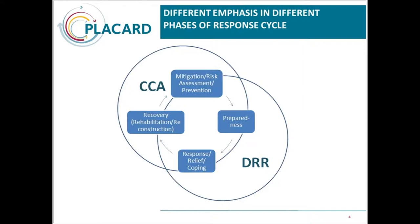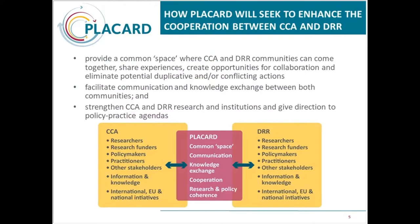It is useful to look at the policy cycle used in disaster risk reduction: from prevention, long-term prevention, to preparedness, to response and relief, and then after an event, the recovery phase. In reality, the emphasis in disaster risk reduction is very much on the event itself and the preparedness and response, and not so much on the longer-term issues of prevention, which is actually the emphasis in climate change adaptation.